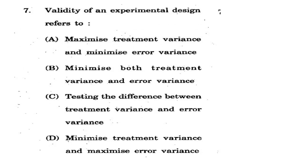The validity of experimental design refers to: options are maximize treatment variance and minimize error variance; minimize both treatment variance and error variance; testing the difference between treatment variance and error variance; minimize treatment variance and maximize error variance. We know that in experimental design validity, we need to maximize treatment variance and minimize error variance. So the correct option is A.